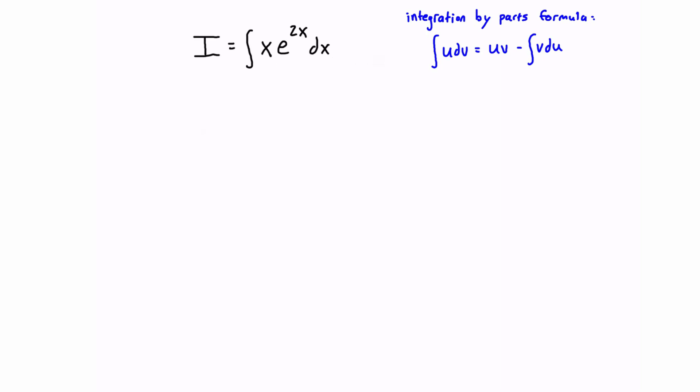So the way that we do that is that we just pick one side that's going to be easy to derive, and one side that's going to be easy to integrate. In this case, it's kind of both, it doesn't matter, but we'll just pick one for example.